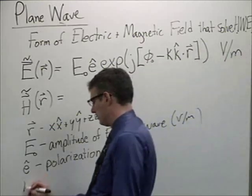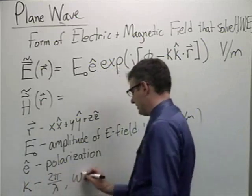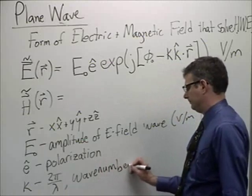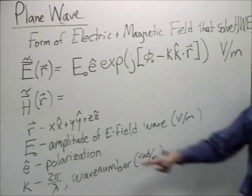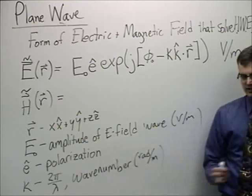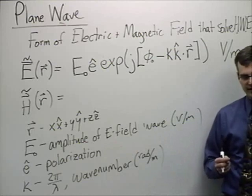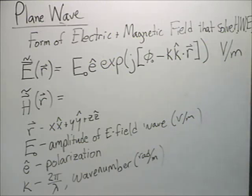Now, of course, K, we said that was 2 pi over wavelength, also known as the wave number. Radians per meter are the units. Notice that E unit vector does not have units. It is one of the great ironies in life that unit vectors are always unitless.